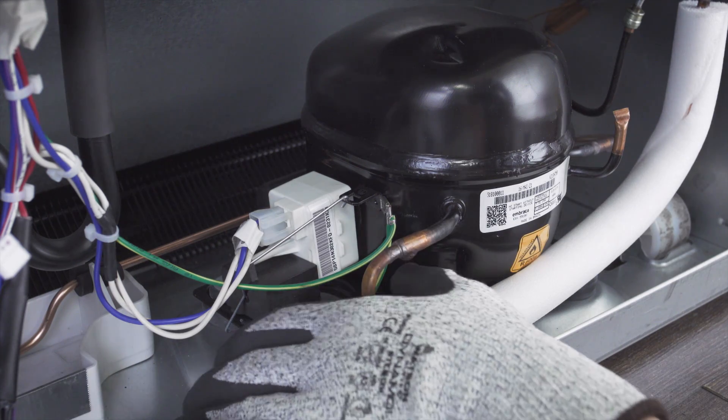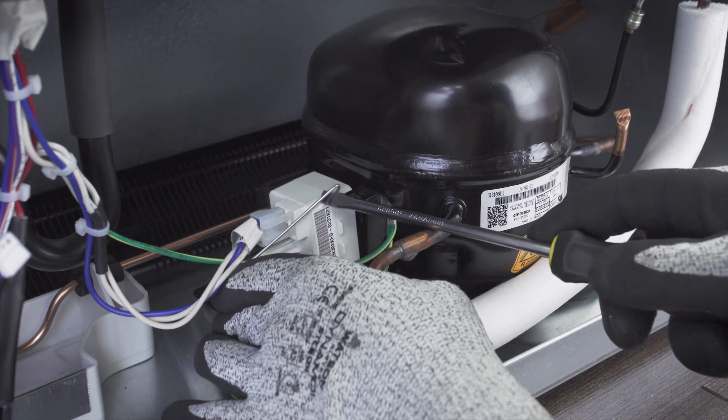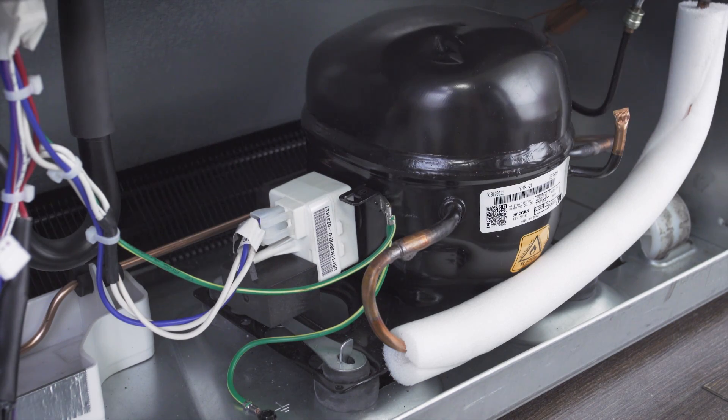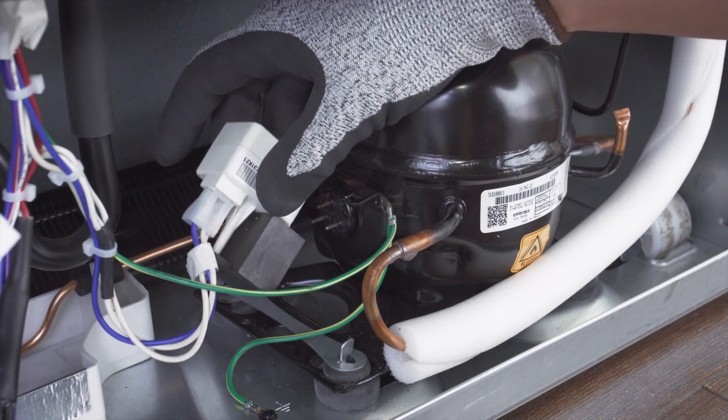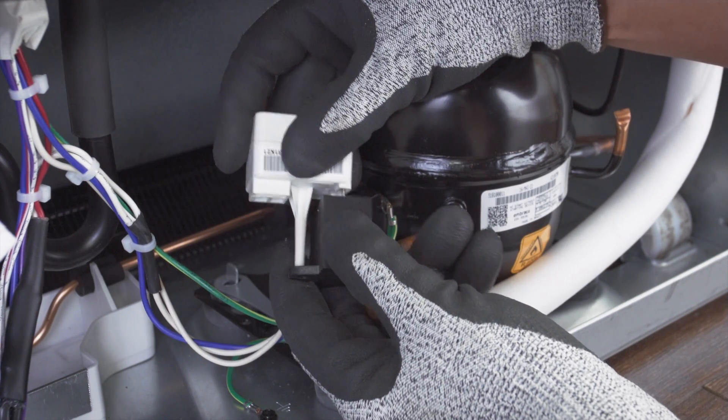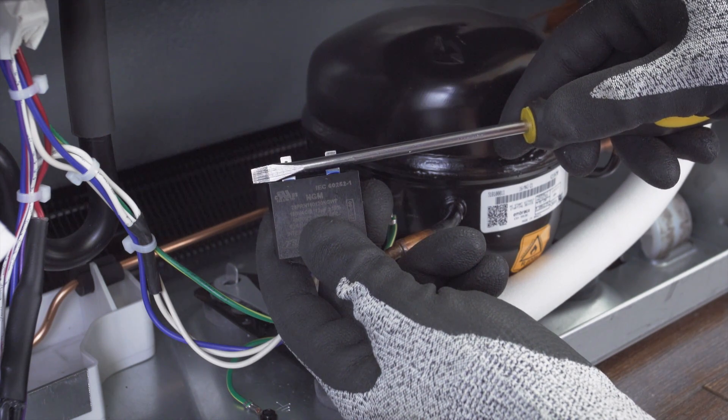In other models, the capacitor will be mounted directly on the relay. In this case, you'll have to remove the retaining clip. Next, remove the capacitor and relay. Now separate the capacitor from the relay. Finally, discharge the capacitor.